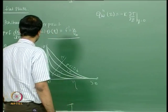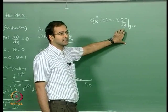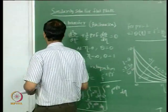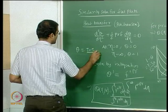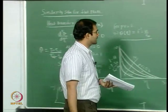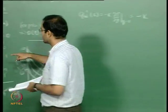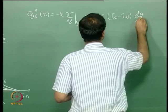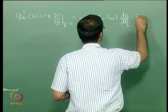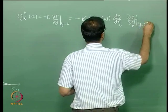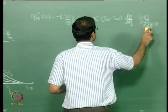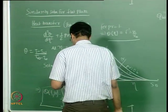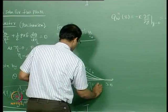Once you know the solution you can convert it in terms of θ and the derivative with respect to η and plug in those values. We defined θ as (T−T_wall)/(T∞−T_wall), so the wall heat flux can be written as −k·(T∞−T_wall)·(dθ/dη)·(dη/dy) evaluated at y=0. This means applying the condition dθ/dη at η equal to 0.